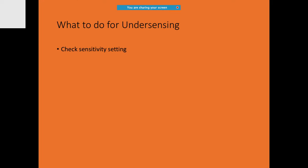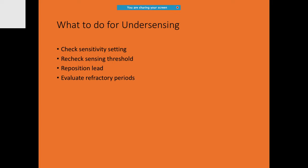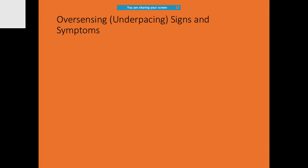When undersensing occurs: check sensitivity settings, recheck the sensing threshold, reposition the leads, evaluate the refractory periods, and change the battery if there is a significant problem.